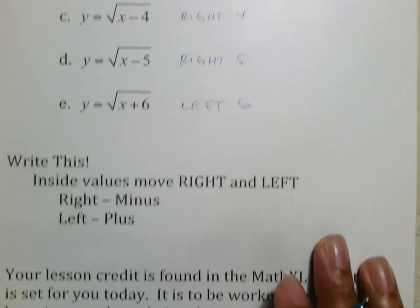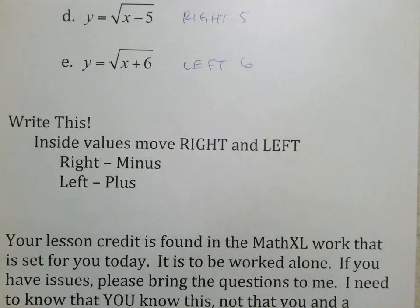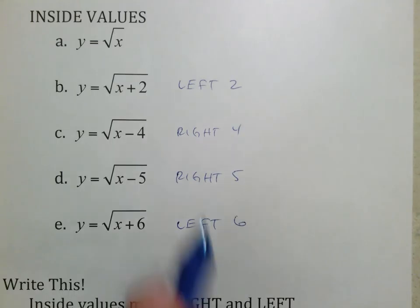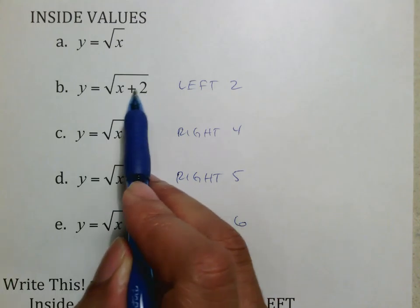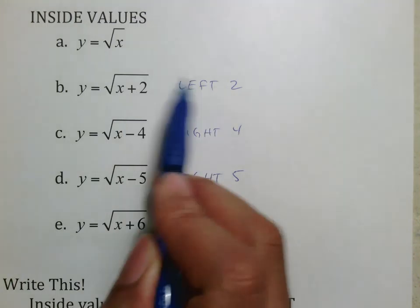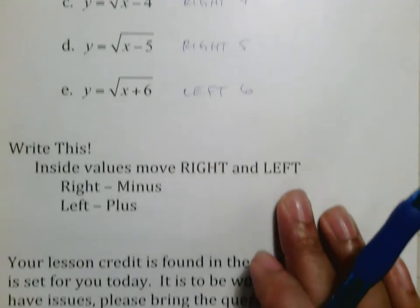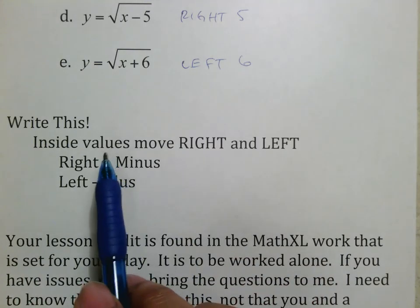So what you're going to write here is what the inside values do. The inside values move left and right. The trick here is, usually plus two makes you think of right two, but what you have to remember on the inside values is that you switch the sign. So right is actually minus, whereas left is plus.